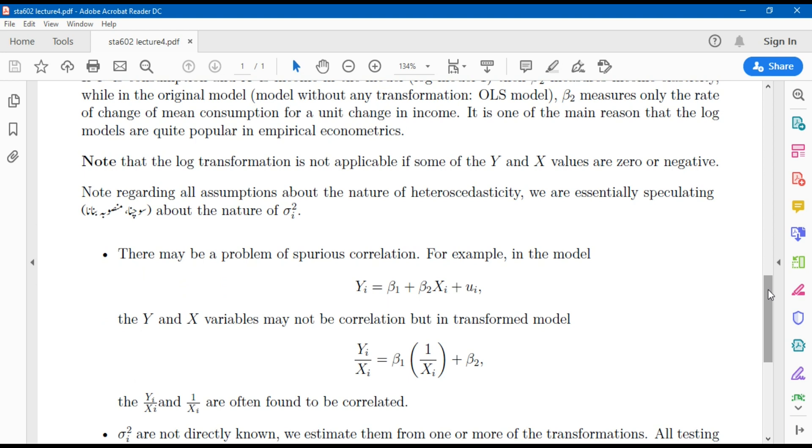Note that the log transformation is not applicable if values of X and Y variables are either negative or zero. For all the hypothetical assumptions we have discussed for the remedy of heteroscedasticity, one should think about the nature of sigma i square. There may be a problem of spurious correlation.